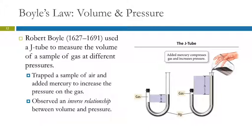Robert Boyle, working even before the 1700s — in the 1600s — did experiments with a J-shaped tube with mercury in it.